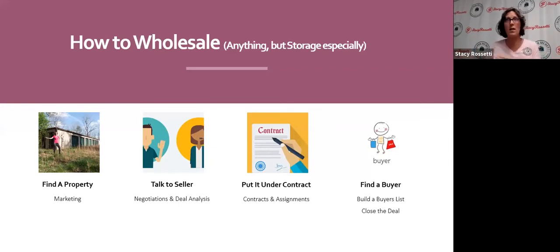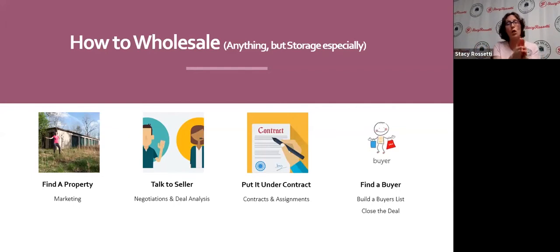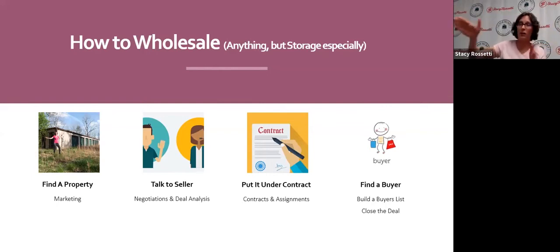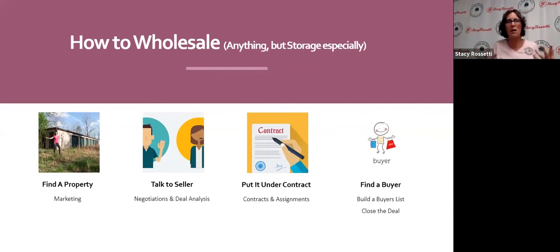Step three: you put it under contract. If the seller says yes and you work out the price, you put it under contract using an assignable contract. If you don't know that word, learn it — assignable means you can either keep it yourself or sell it to somebody else. As a wholesaler, you are just the middle person. You find a seller and you find a buyer, and you get that little cut. It's like a broker or realtor listing it and getting paid at closing — except you're the middleperson between the seller and the buyer.